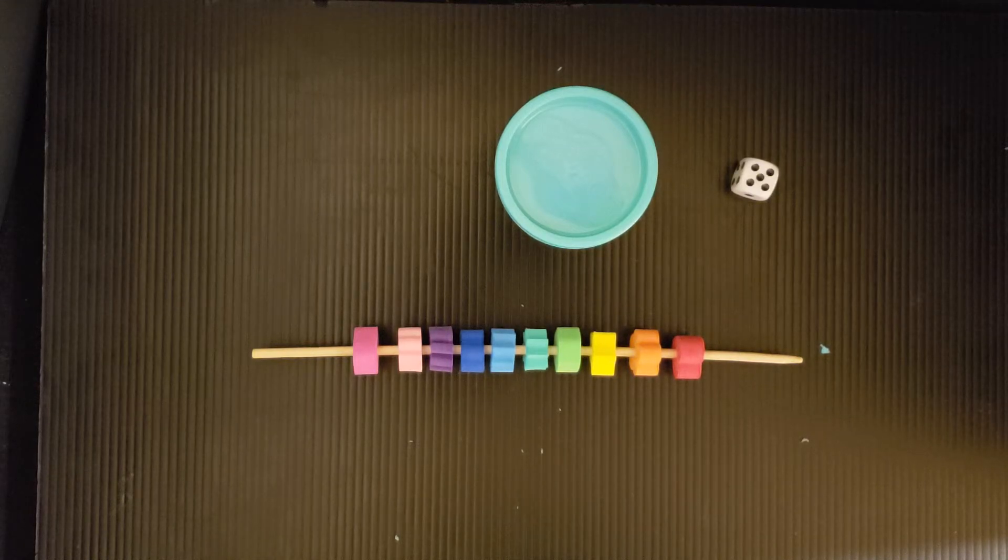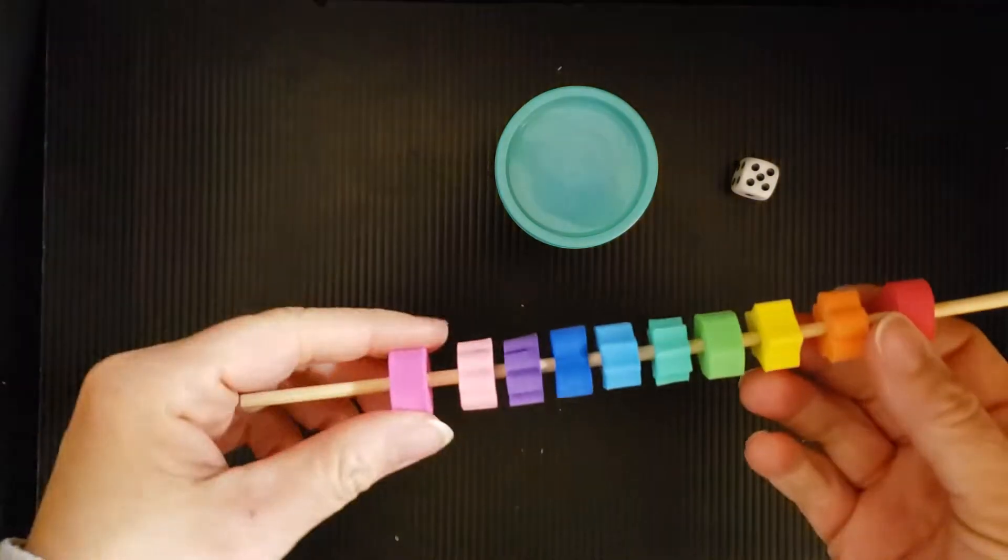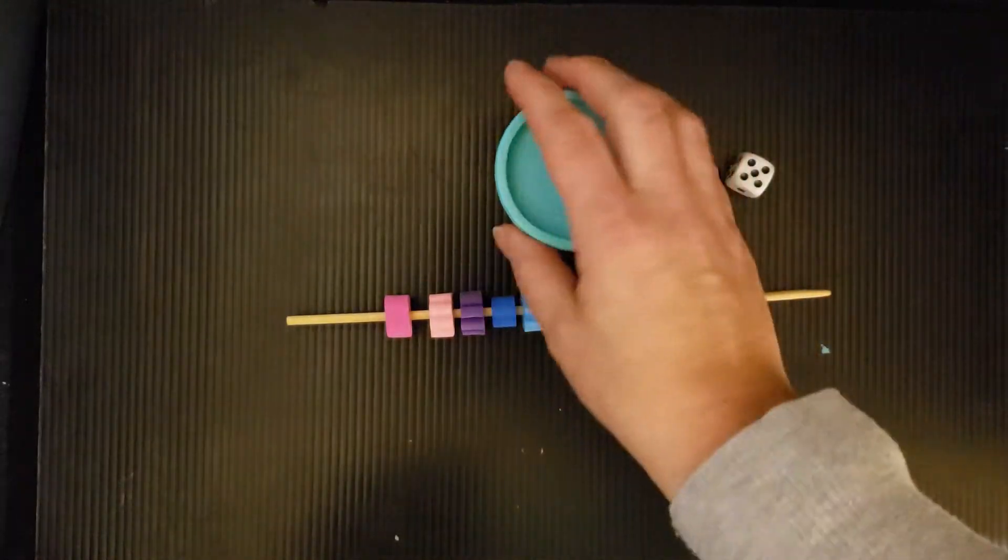I'm going to show you an activity using supplies from your OT Fine Motor Kit. For this activity, you need the foam shapes that are on the craft stick. You need your dice and your Play-Doh.